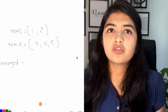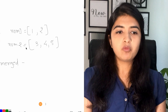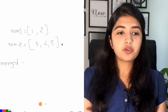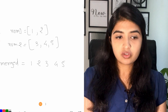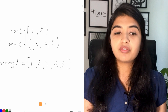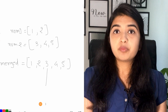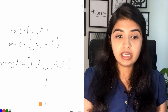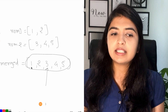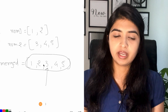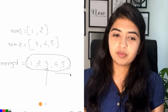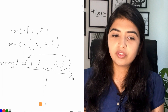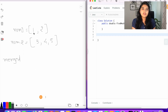Let's think of a solution with an example. Say num1 is [1, 2] and num2 is [3, 4, 5]. The merged sorted array would be [1, 2, 3, 4, 5], and our median is 3. We need a merged sorted array, but do we really need to merge beyond the middle point? No — so let's create a function that merges the two arrays only up to the midpoint.